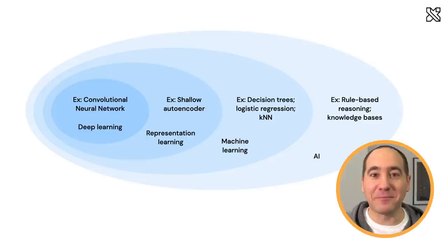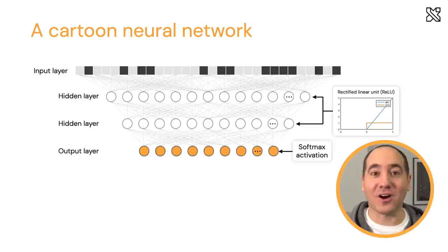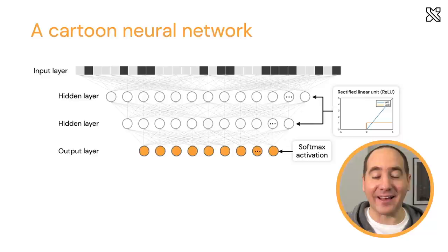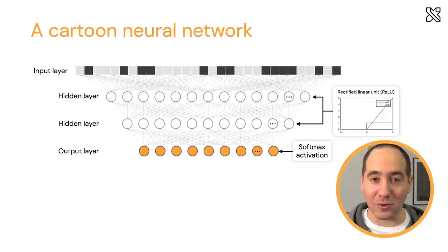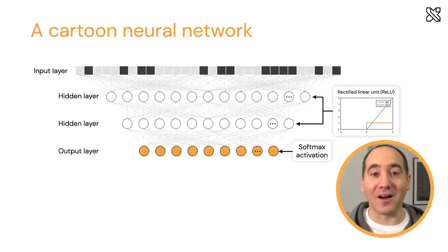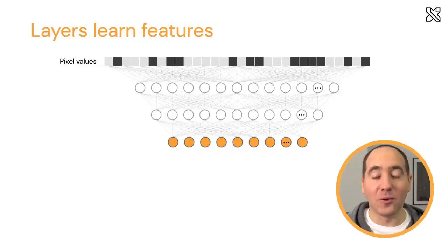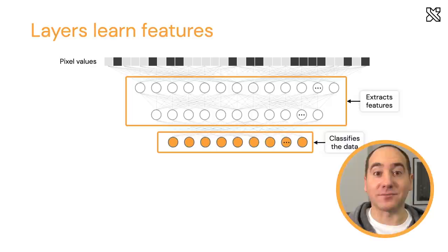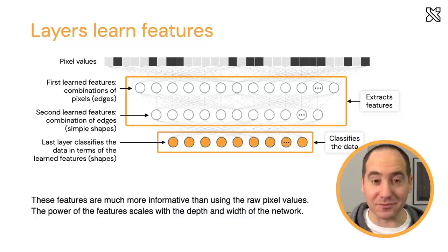Deep learning is synonymous with neural networks. The basic idea is that you have multiple layers of neurons, and each layer is learning a different type of representation. Looking at a cartoon diagram of a deep neural network: at the top we have unrolled pixels from a grayscale image — flattened into a long vector because this network is composed of dense layers, which can only take vectors as input. Each circle corresponds to a neuron, and each row of circles corresponds to a layer. The rough idea is that we want to classify this image in terms of high-level features without having to write feature extraction code ourselves. The last layer classifies the data, with one output for every class you can predict.